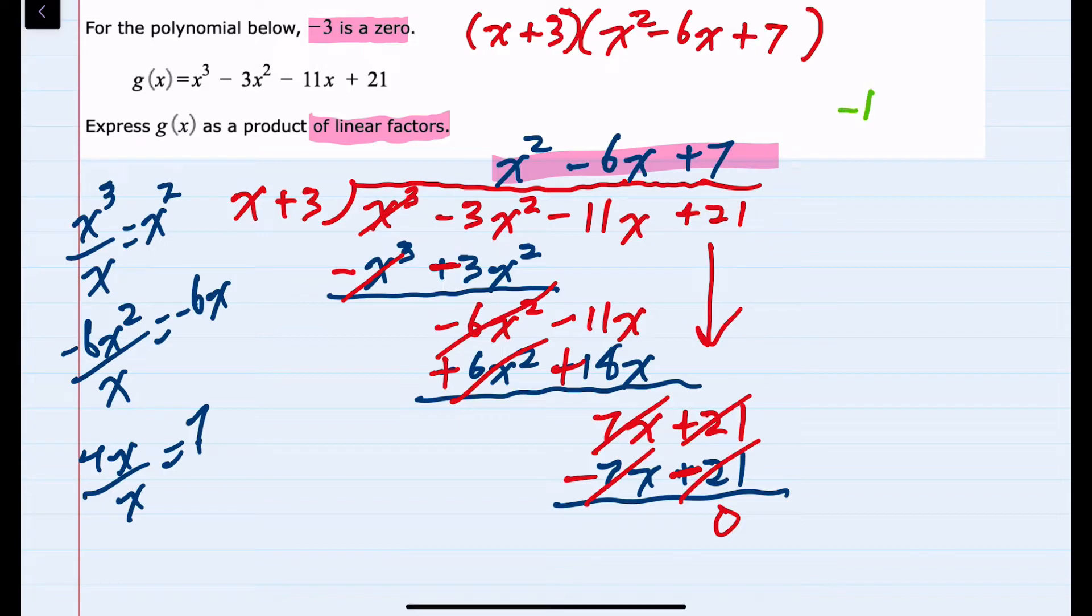Recalling that for the quadratic formula, we have negative b plus or minus the square root of b² minus 4AC all over 2a. Here my a is 1, my b is a negative 6, and my c is 7.